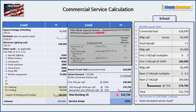We divide by our voltage — this is three-phase, so we multiply 208 volts times the square root of 3, then divide that into 522,750 VA. We get 1,452 amps, and that is our service size.